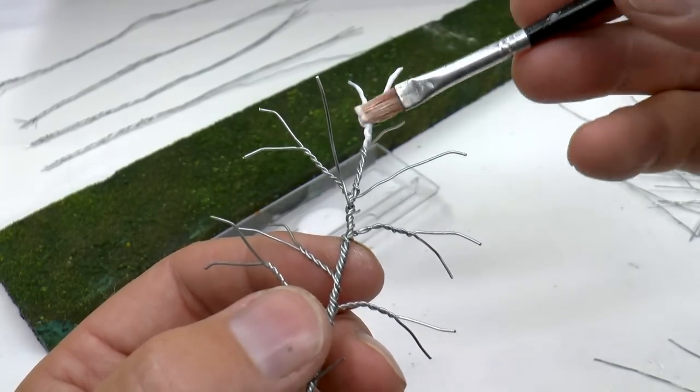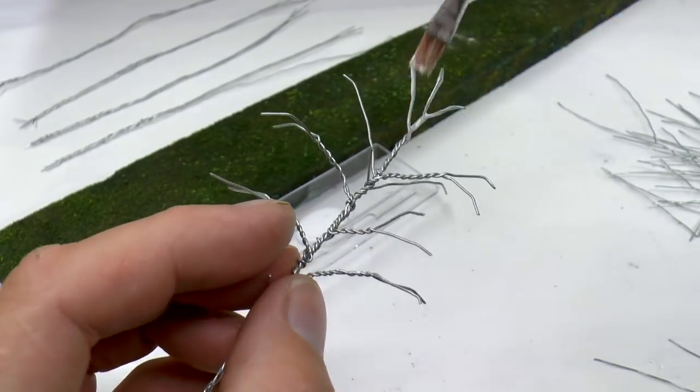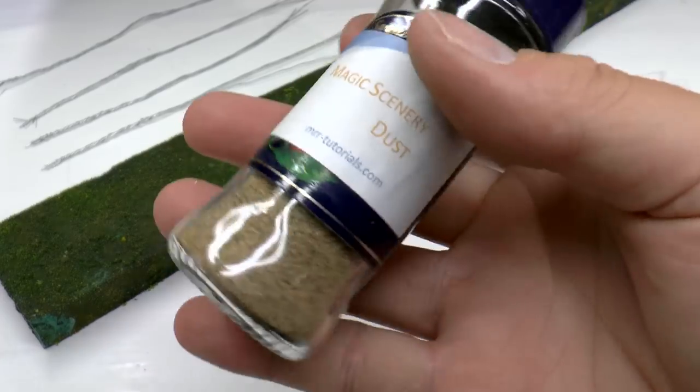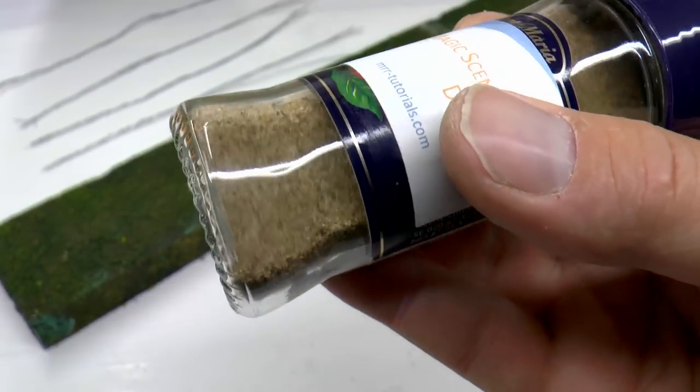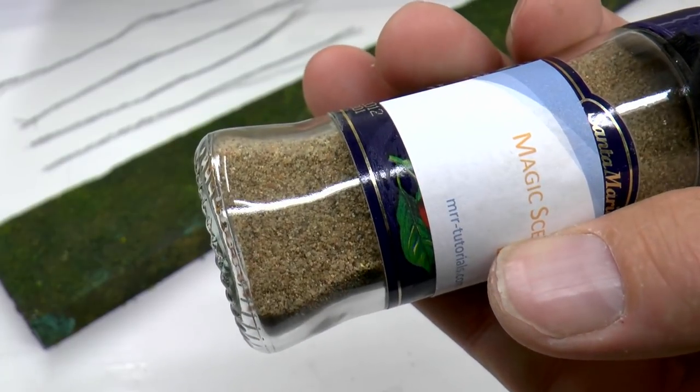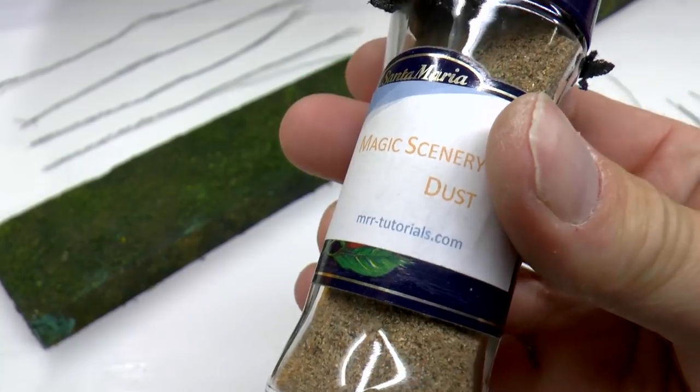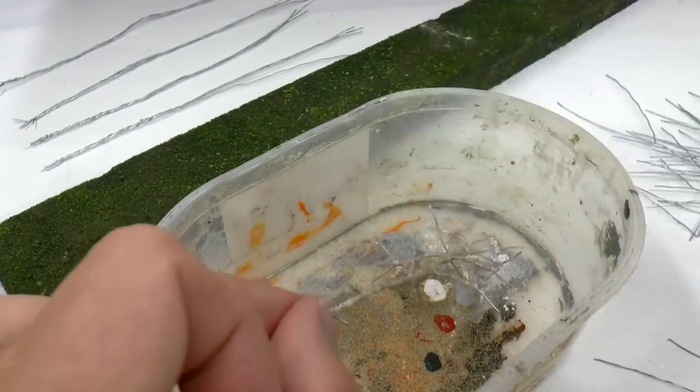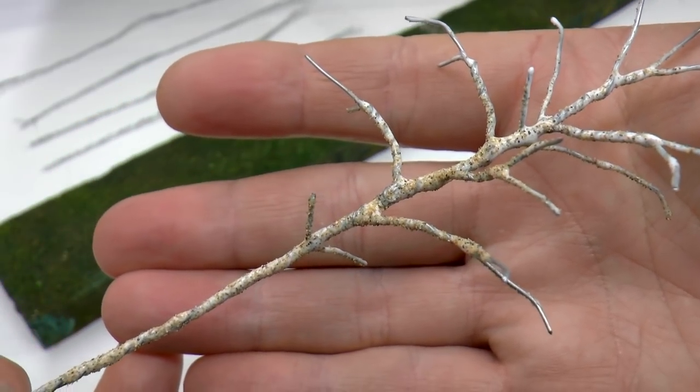So the first step now is to cover the entire tree using the PVA glue and a brush. I use a sorted sand which I sprinkle into the glue covering. This sorted sand is easy to make on your own and there is a tutorial available on how to do it if you're uncertain. So I'm covering the entire tree with the sand and this is what it looks like when done, the first layer.